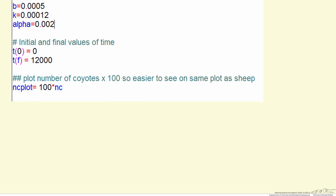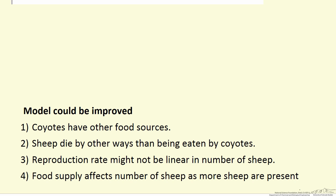This is a simplistic model. We could add additional terms to account for other food sources for coyotes and the fact that sheep can die by means other than being eaten by coyotes.